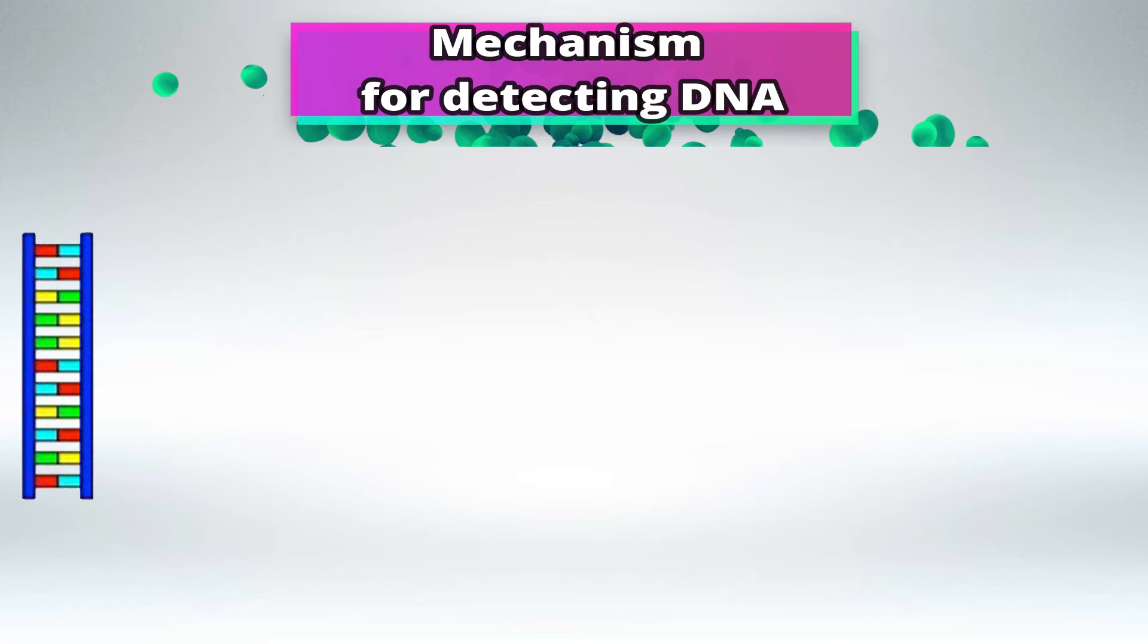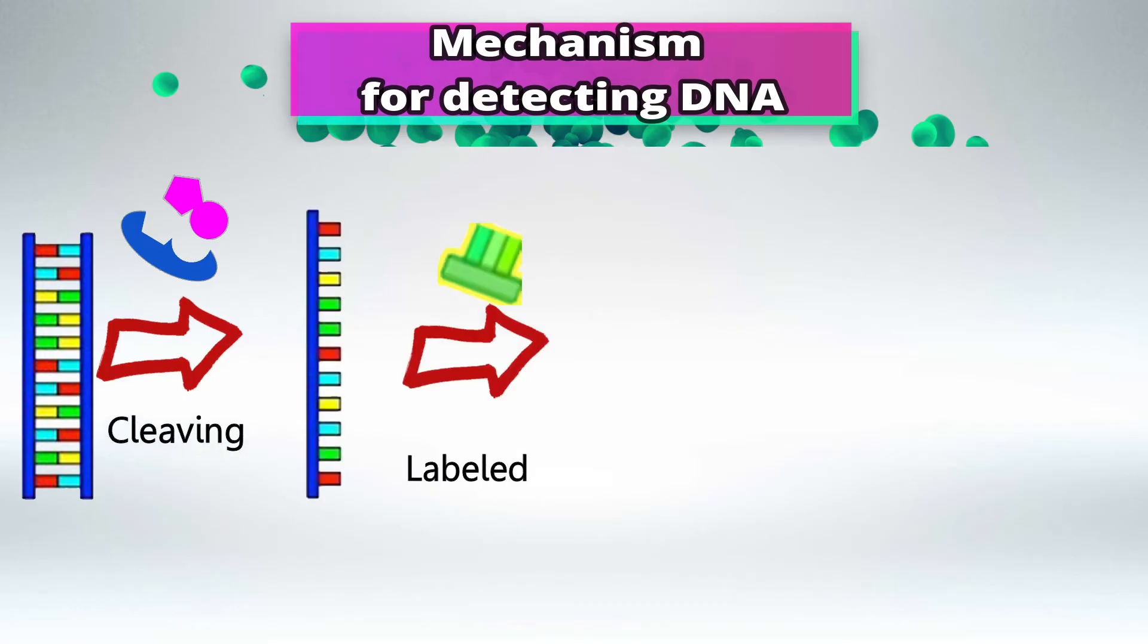We'll start off with a sample of DNA that may or may not contain the certain segment of DNA that we're looking for. We'll use cleaving enzymes to take off one strand of the DNA and we'll add a radiolabeled primer that is specific to that DNA that we want.